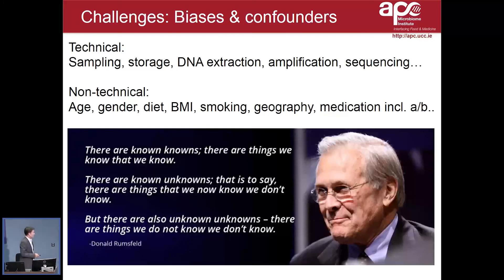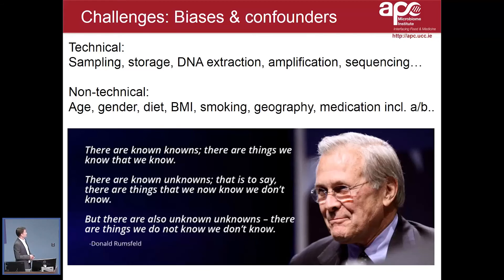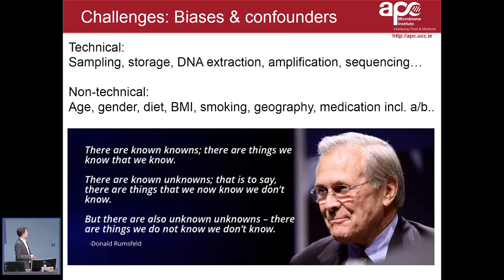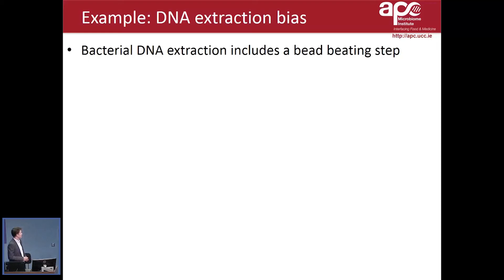Perhaps the biggest contribution Donald Rumsfeld made was summarizing the knowns and unknowns — and you can classify some of these biases that way. There are known knowns: we know that antibiotics affect the gut microbiota and roughly how. There are known unknowns: we know that a certain DNA extraction method will change results, but not exactly how. And there are unknown unknowns that surprise you once you encounter them. This is important to be aware of.